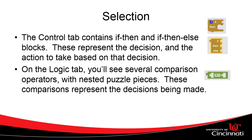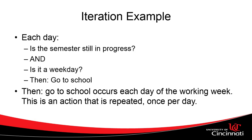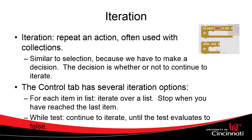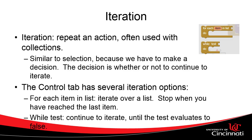Iteration is going to be a repeated action. An example of iteration is what I do each day: is the semester in progress, and is it a weekday? If these two things are true, then I go to school. Every day of the semester is a member of a collection, and every day I'm going to apply these same steps. In App Inventor, this is also under the Control tab, and we have things like for each number, for each item, while, and do — all of these will do iteration.